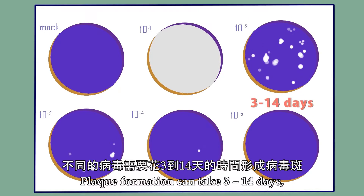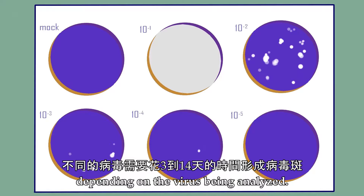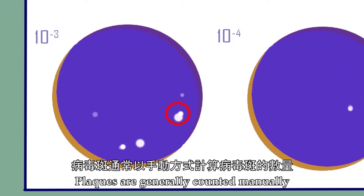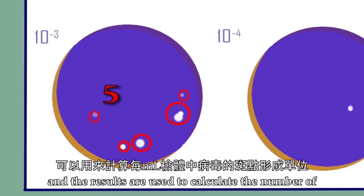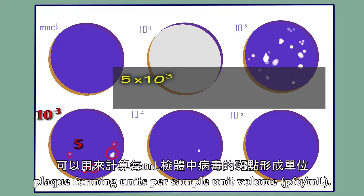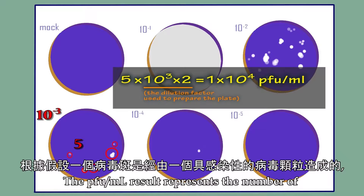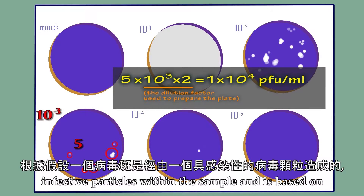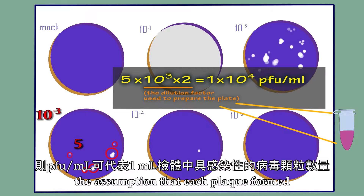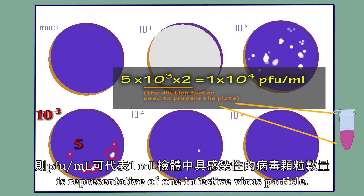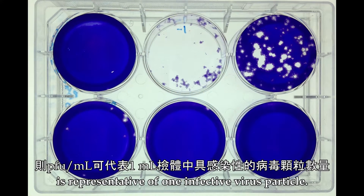Plaque formation can take 3 to 14 days depending on the virus being analyzed. Plaques are generally counted manually and the results are used to calculate the number of plaque forming units per sample unit volume. The PFU per ml result represents the number of infective particles within the sample, based on the assumption that each plaque formed is representative of one infective virus particle.